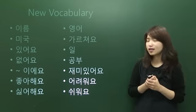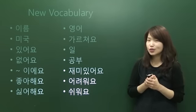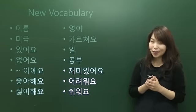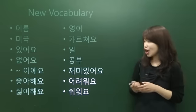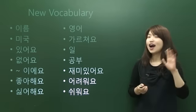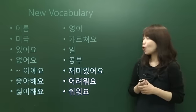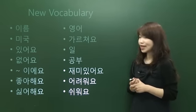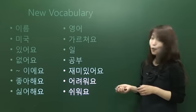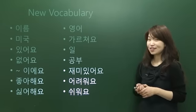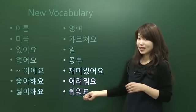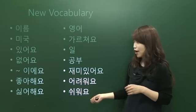어려워요 — so hard, so difficult. 한국어 너무 쉬워요. It is so easy to study Korean. Right? 너무 쉬워요 — so easy. 쉬워요 — easy.